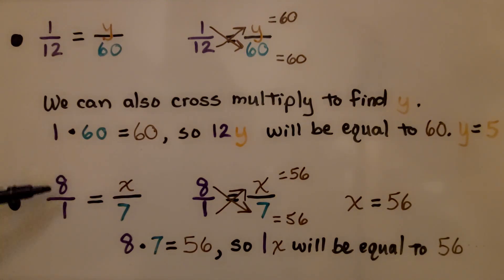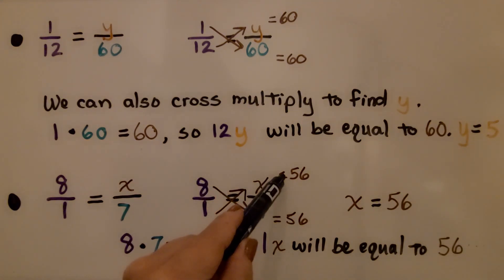If we had the ratio of 8 to 1, and it's equal to x to 7, we think, well, 8 times 7 is 56, so 1x needs to be 56.